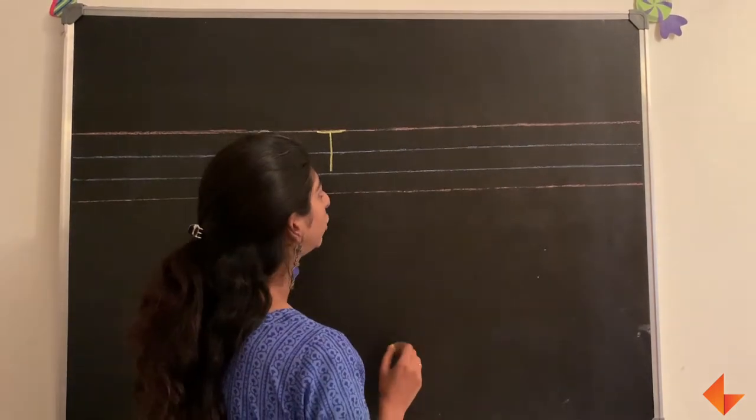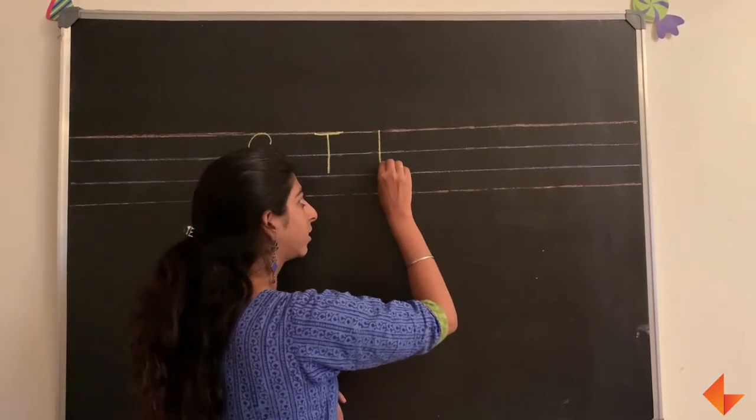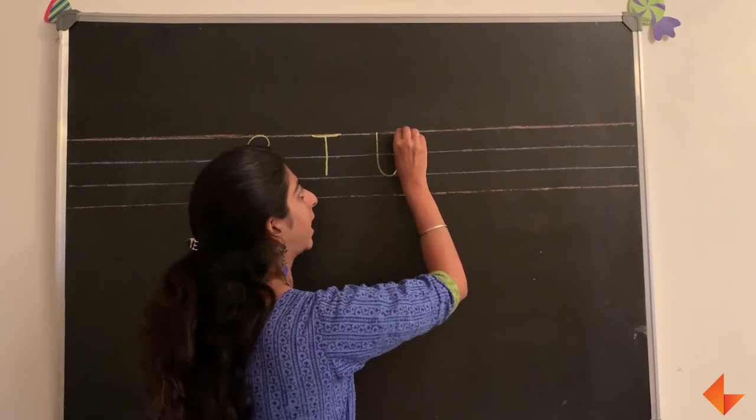To write the letter U, draw a big curve and take it back up.